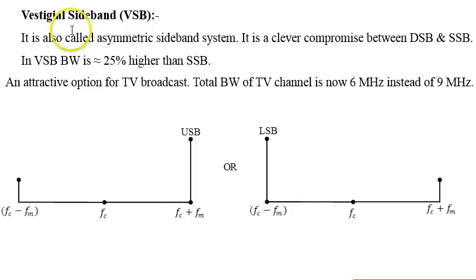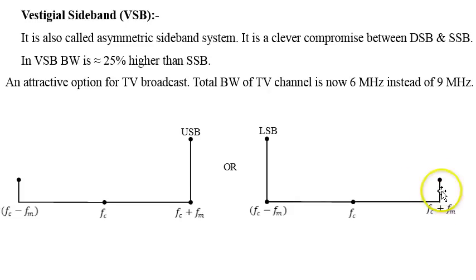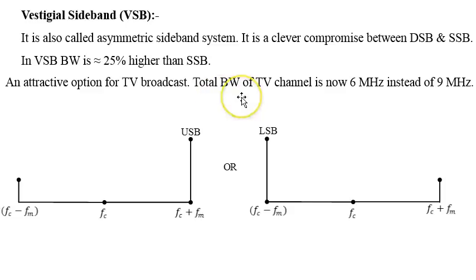Vestigial sideband (VSB) transmits a vestigial trace of the other sideband as well. One full sideband is sent along with a partial portion of the other sideband. In VSB, bandwidth is about 25% higher than SSB, making it a compromise between SSB and DSB systems. It is a very attractive option for TV broadcast, where the channel bandwidth requirement is 4.5 MHz per sideband — needing 9 MHz for both sidebands but manageable within 6 MHz using VSB.